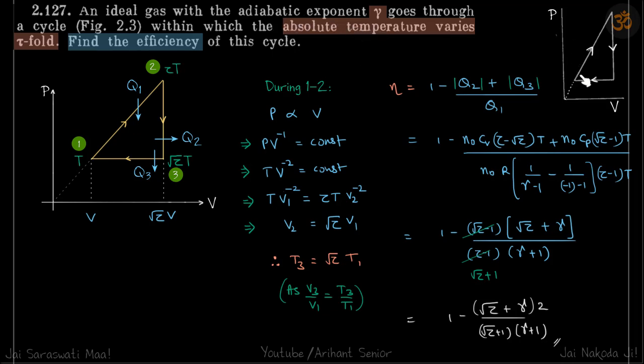An ideal gas goes through a cycle which looks like this, with a line passing through the origin. We need to find the efficiency of the cycle if temperature varies τ-fold. The minimum temperature is here and the maximum temperature is here.